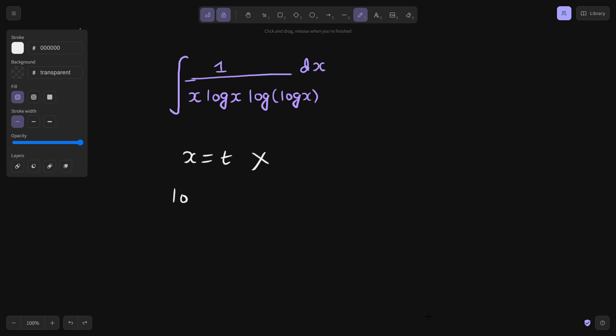If you will take log x as t, this will again not work for you. Why? Because you will get 1 by x dx equals to dt but you will get again log t and a t in denominator which is again not a solution we are looking for.